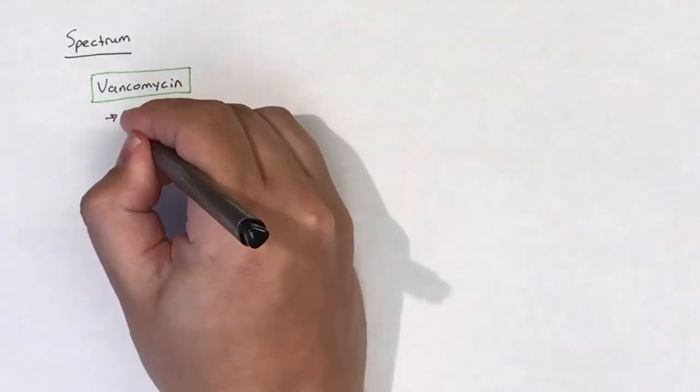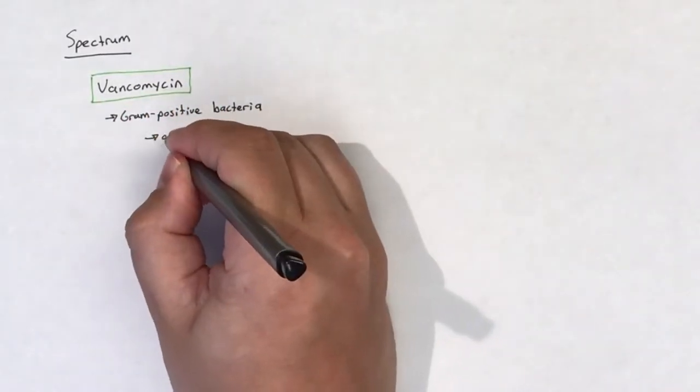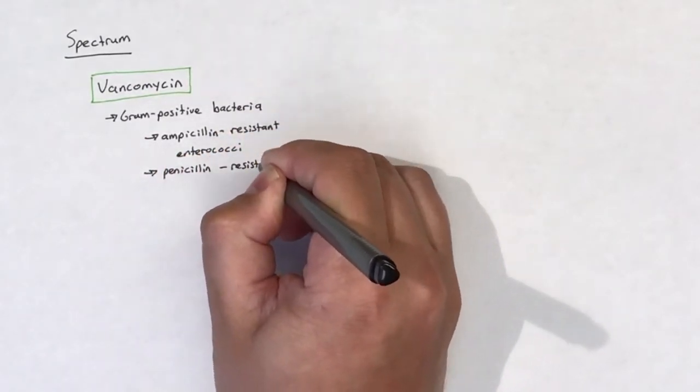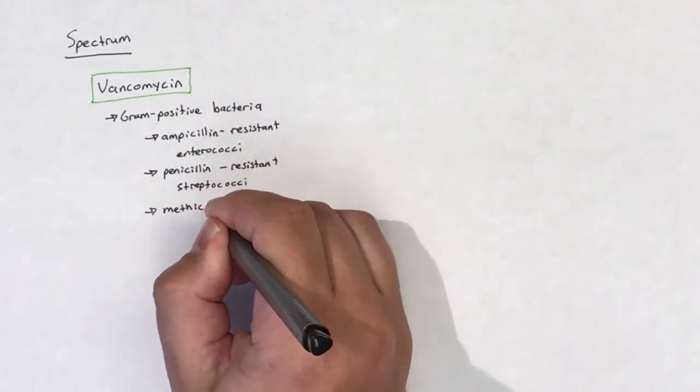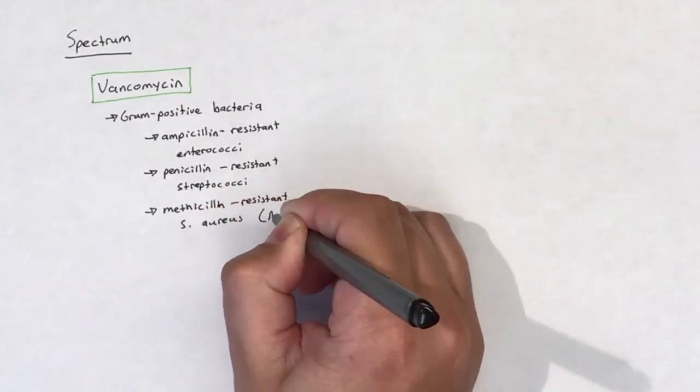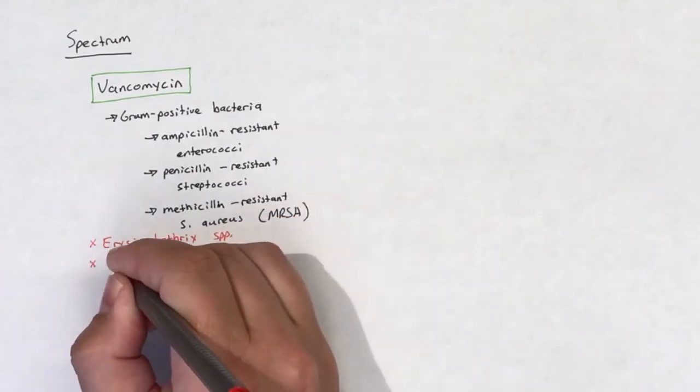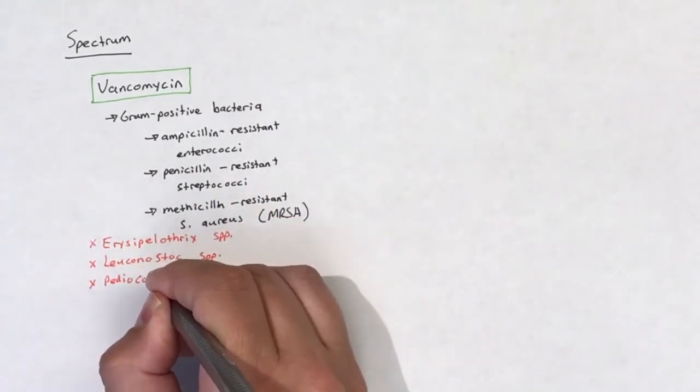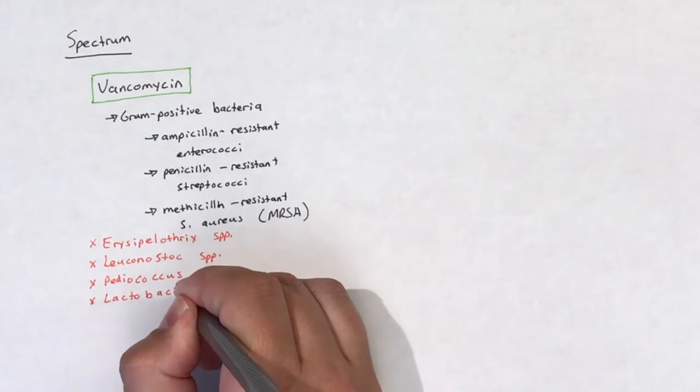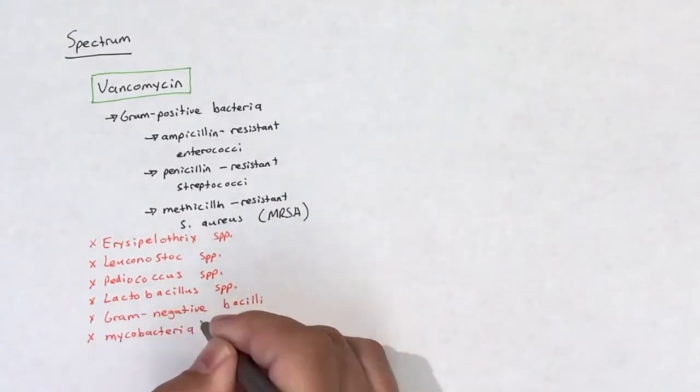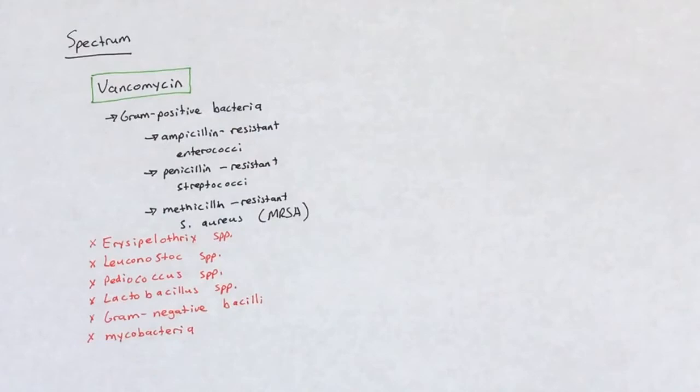There are a few gram-positive bacteria that have resistance to vancomycin, and these include Erysipelothrix, Leuconostoc, Pediococcus, and Lactobacillus species. Pretty much all gram-negative bacilli and mycobacteria are resistant to vancomycin as well.